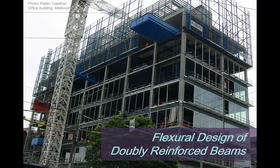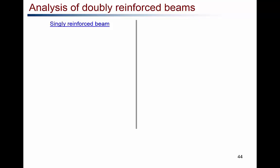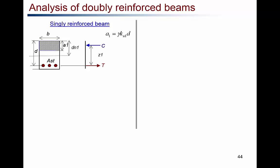In this video we'll be talking about the flexural analysis of doubly reinforced beams and compare how it differs from singly reinforced beams. For singly reinforced beams, the equivalent stress block depth is represented as A1, equal to gamma·KU1·D. The reinforcement is in the tension side with area AST, and the neutral axis depth from the top fiber is denoted DN1.